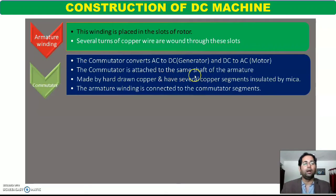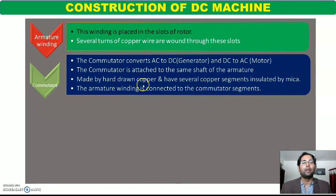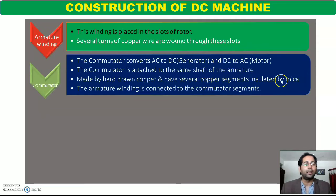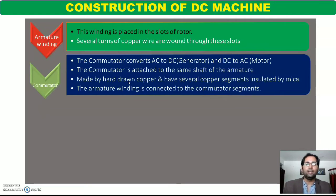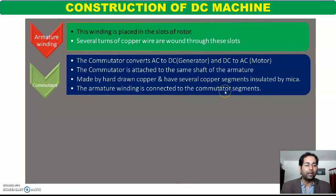Commutator shaft के ऊपर mounted होता है और वो armature से connected होता है. Commutator hard drawn copper का बना होता है, और उसका जो shape होता है circular है, जिसमें बहुत सारे segments हम बनाते हैं. दो segments के बीच में insulation करते हैं ताकि हम winding को switch कर सकें, और उस insulation के लिए हम mica या paper sheet का use करते हैं. यानि commutator के hard drawn copper के wires कहीं न कहीं हमारे armature windings के through connected होते हैं — यानि जो भी commutator के पास energy होगी, वो पूरी की पूरी armature को transfer हो जाएगी. The armature winding is connected to the commutator segments.